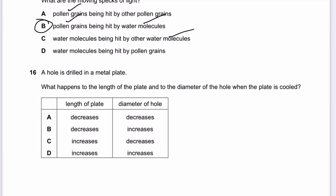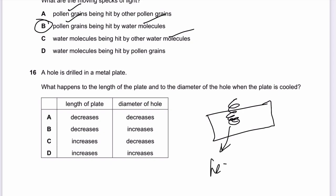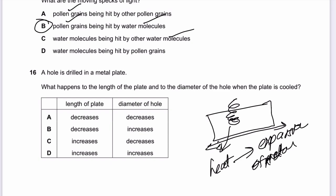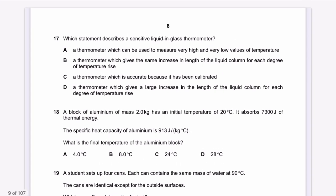Question 16: A hole is drilled in a metal plate. What happens to the length of the plate and the diameter of the hole when the plate is cooled? Drilling creates friction and heat, causing the metal to expand. When cooled, the metal contracts — so the length of the plate decreases and the diameter of the hole decreases. The answer for question 16 is A.